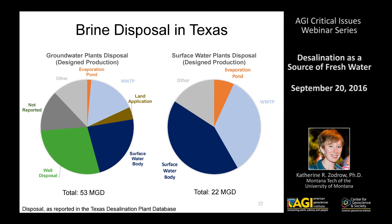Looking at a breakdown by plant type — where the size of each pie represents the design production of the plants — groundwater plants are on the left and surface water plants on the right. The green well-disposal piece for groundwater plants is basically all the plants in El Paso. For surface water body disposal on the left, a good chunk of that represents a plant in Brownsville at the southernmost tip of Texas.